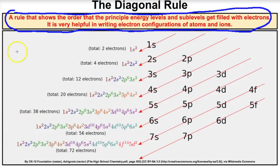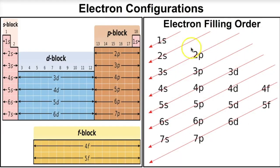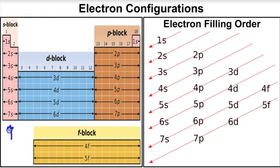When working on electron configurations, I always like to have the electron filling order in front of me, along with a periodic table of elements showing the different blocks. Have the filling order and a periodic table out, and label the s-block, d-block, p-block, and f-block on your periodic table. Let's do some electron configurations and hopefully you'll get the hang of it.